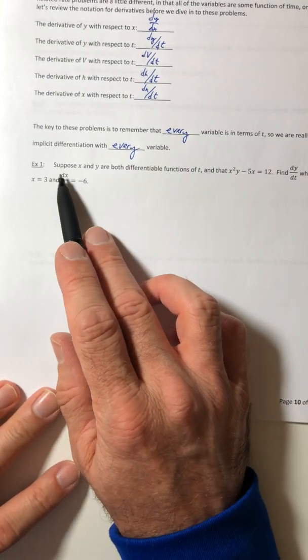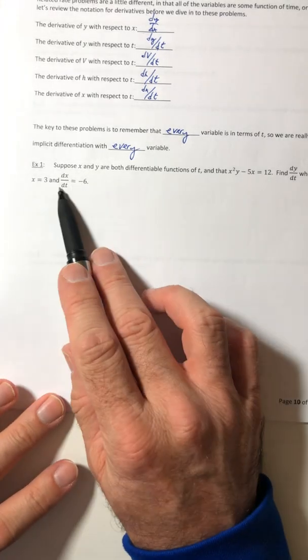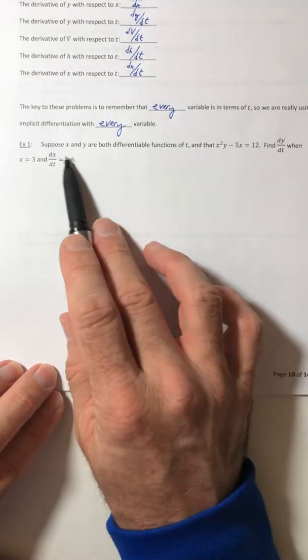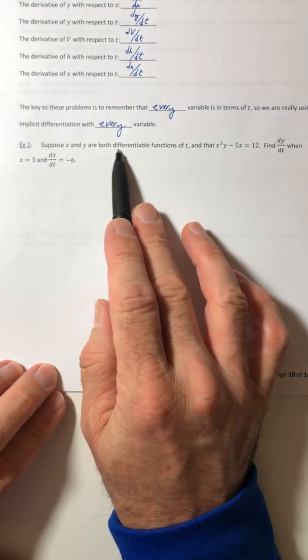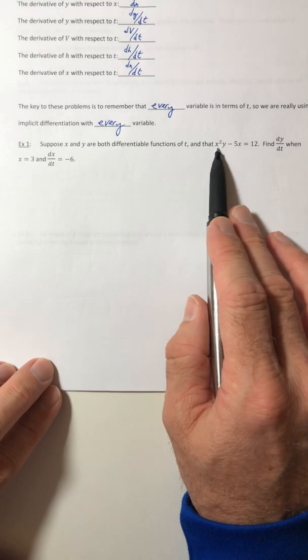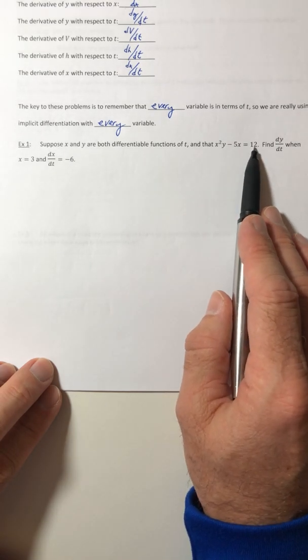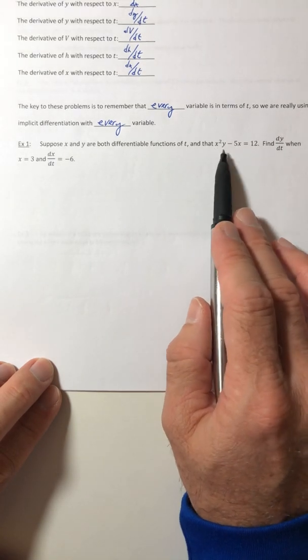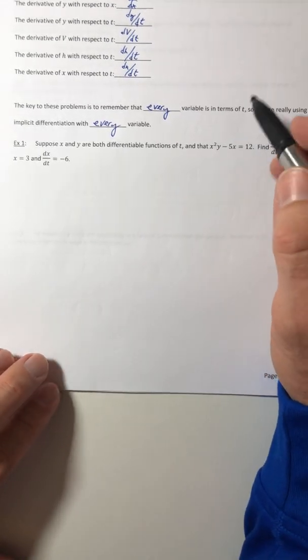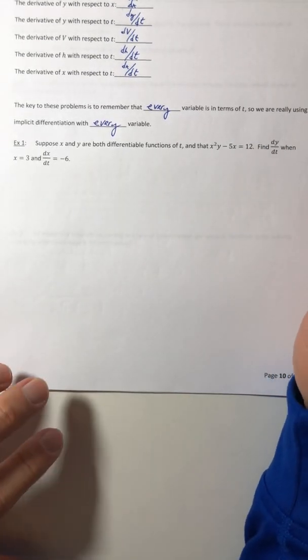Okay, so before we get into a real life problem, we're just going to go with a general function. Suppose x and y are both differentiable functions of t, and that x²y - 5x = 12.